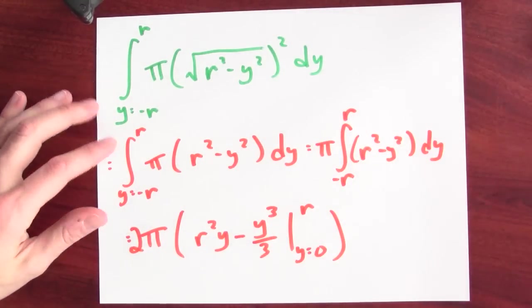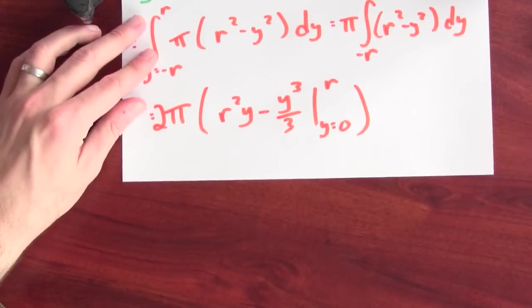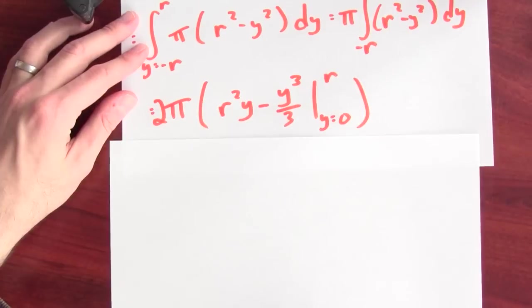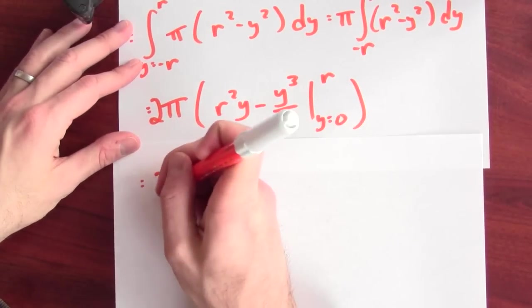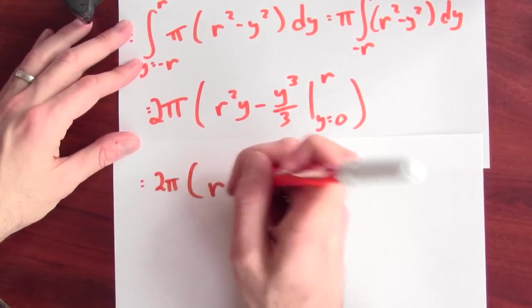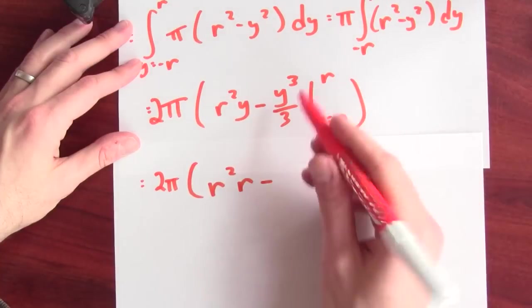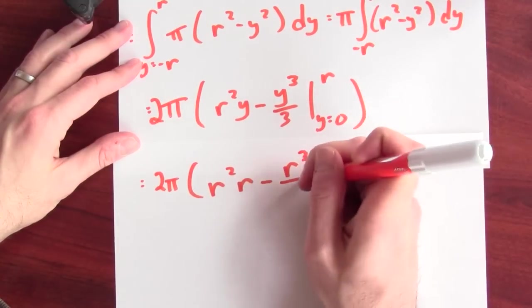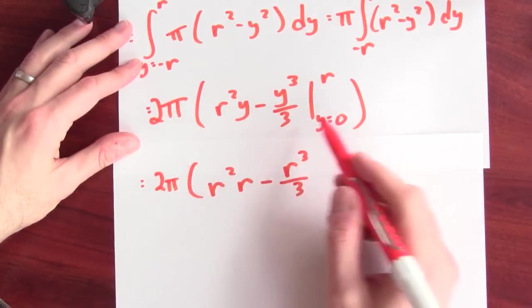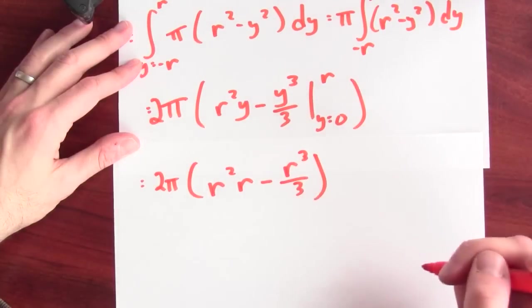Now, I've just got to plug in r and plug in 0. When I plug in r, I get r squared times r minus r cubed over 3. And when I plug in 0, I just get 0. So, I'm going to have to subtract that.